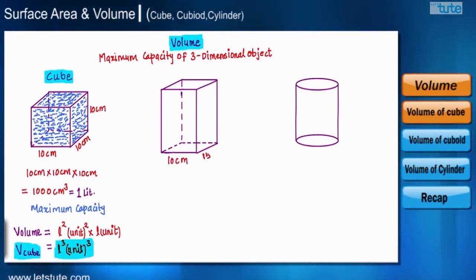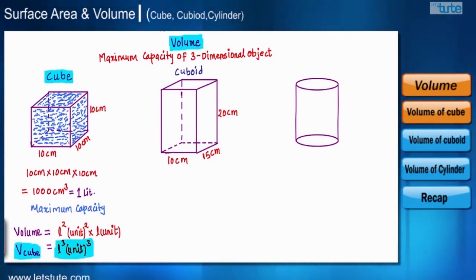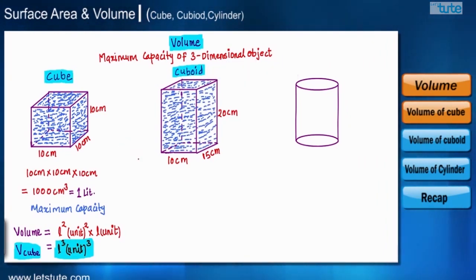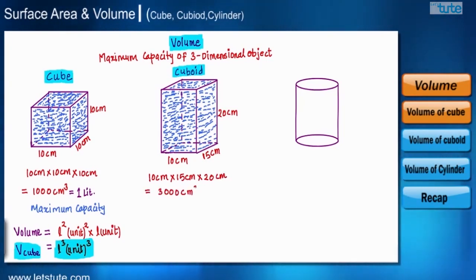Now let's pour water in the second container, which has length 10 cm, breadth 15 cm, and height 20 cm. All dimensions are different, so this shape is called a cuboid — many call it a rectangular prism. The volume of water it can hold is the area of the base (10 cm × 15 cm) multiplied by the height (20 cm), giving 3000 centimeter cubed, or 3 liters.